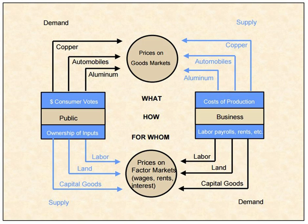Economic price theory asserts that in a free market economy the market price reflects interaction between supply and demand; the price is set so as to equate the quantity being supplied and that being demanded. In turn, these quantities are determined by the marginal utility of the asset to different buyers and to different sellers.